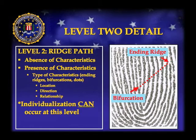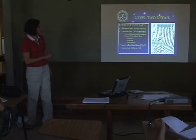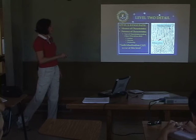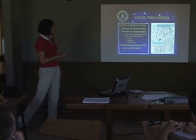Level two not only encompasses characteristics, but also their absence. You have a bifurcation that is opening up, then several ridges which are continuous, and then an ending ridge. When doing a comparison, I would look at this bifurcation and count one, two, three, four, five, six intervening ridges, and then come to an ending ridge. I would look for that in my known print and in my latent print. If those are different, I would be able to exclude. When looking at characteristics, we look at their location, direction, type, and relationship — not just counting a point, but looking at all the information within and around it.